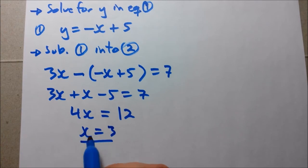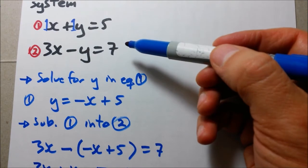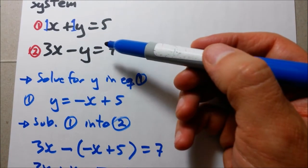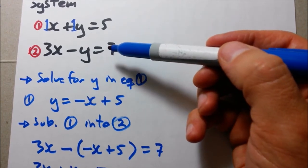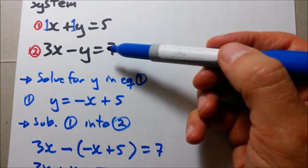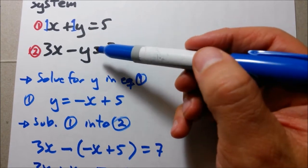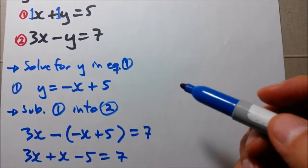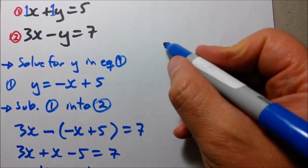And now what we're going to do is we can sub this x coordinate into either equation 1 or 2, and then find out what the value of y is, our y coordinate. Now you can choose either equation 1 or 2. It doesn't matter which one you choose. It will give you the same answer. So I'm going to choose equation 1 because it has smaller numbers. It makes the math easier to do.